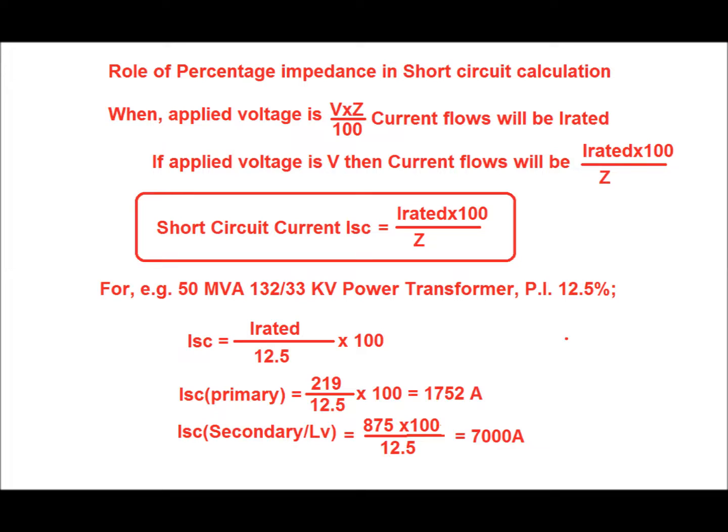The role of percentage impedance in short circuit calculation: when applied voltage is V × Z / 100, current flow will be I rated. If applied voltage is V, then current flow will be I rated × 100 / Z. Therefore, short circuit current ISC = I rated × 100 / Z. For a 50 MVA, 132/33 kV power transformer with percentage impedance of 12.5%, ISC on the primary side = 219 / 12.5 × 100 = 1752 amperes. For the secondary or LV side, short circuit current = 875 × 100 / 12.5 = 7000 amperes.